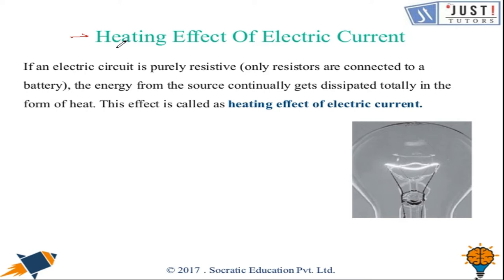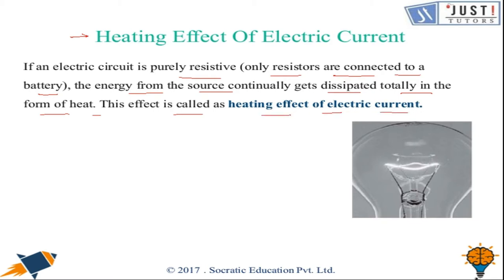Heating effect of electric current: if an electric circuit is purely resistive, that is only resistors are connected to a battery, the energy from the source continually gets dissipated totally in the form of heat. This effect is called the heating effect of electric current. It is effectively utilized in heaters, electric irons, electric toasters, etc. An electric bulb becomes warm if used continuously for a longer period of time. Another example would be the water heater where electrical energy is converted into heat energy.